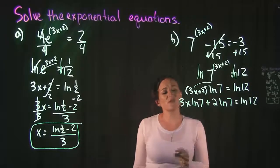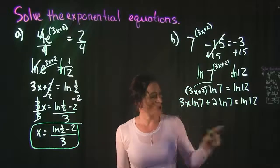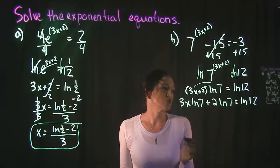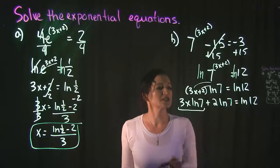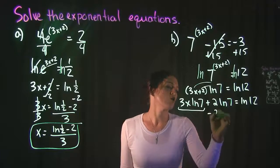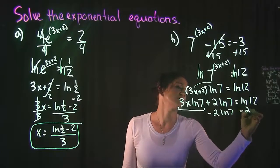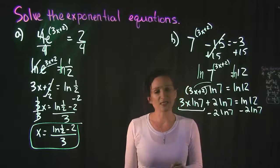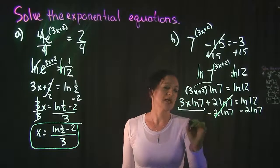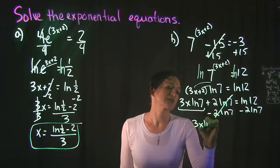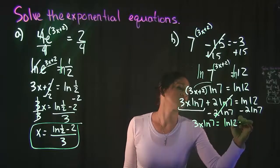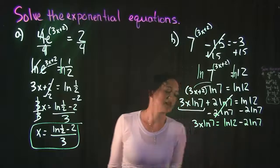Now what I'm going to do is move everything that does not have an x in it to one side of the equation. So I'm going to subtract 2 ln 7 on both sides. It's going to cancel on the left, leaving me with 3x ln 7 = ln 12 - 2 ln 7.